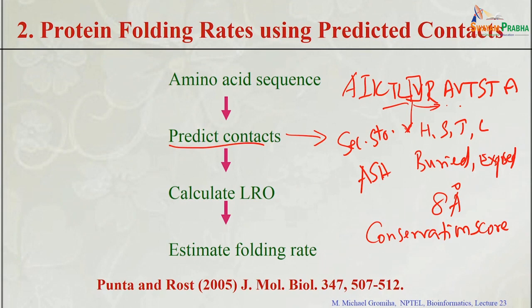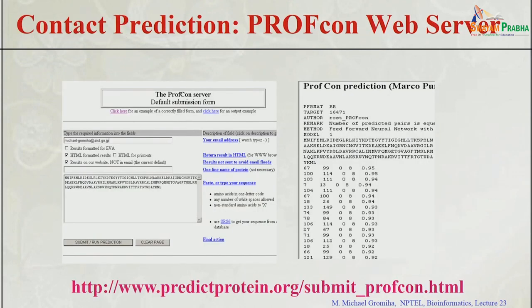For any sequence without known structure, they input neighboring residues, secondary structure, solvent accessibility, and conservation scores to predict contacts. Once contacts are known, LRO can be predicted since we only need the cutoff of 12 residues and count the number of contact pairs with sequence separation greater than 12. Once LRO is obtained, the folding rate can be derived — this is the indirect method using predicted contacts. A server is available that accepts amino acid sequences and outputs predicted contacts with probabilities.